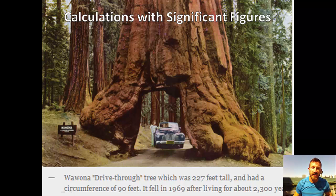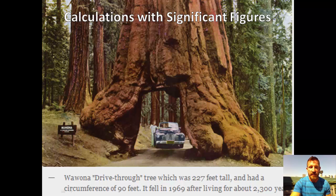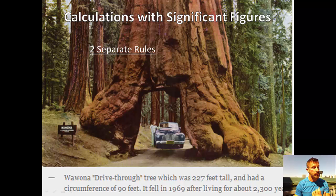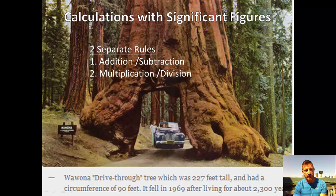Calculations with significant figures. The first video was about how you looked at numbers and determined how many significant figures were in those numbers. This video is about how you do calculations and give your answer with the correct number of significant figures. There are two separate rules: the first rule applies for addition and subtraction, and the second rule applies for multiplication and division.